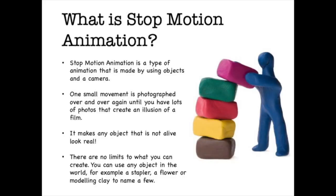So what is stop-motion animation? Stop-motion animation is a type of animation that is made by using objects and a camera. One small movement is photographed over and over again until you have lots of photos that are put together and create an illusion of a film. It makes any object that is not alive look real. There are no limits to what you can create — you can use any object in the world, for example a stapler, a flower, or modelling clay.